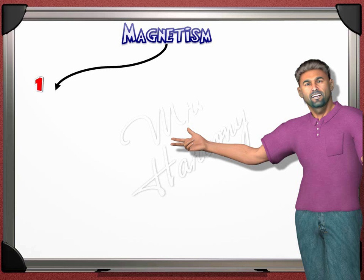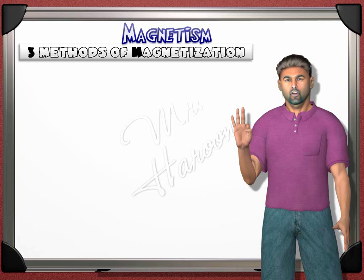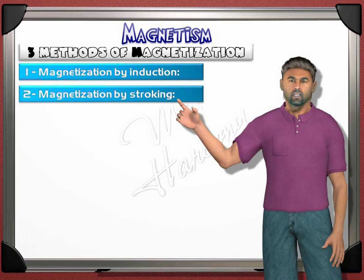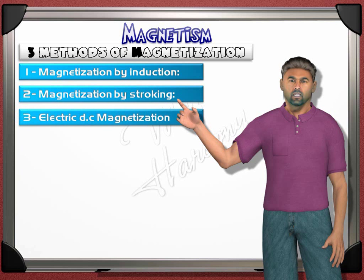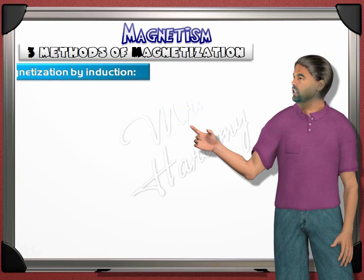We will discuss three methods of magnetization — how to change a piece of iron or steel into a magnet. Number 1: magnetization by induction. Number 2: magnetization by stroking. Number 3: electric DC magnetization.